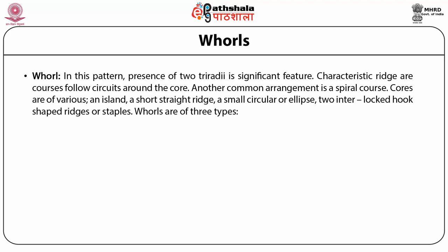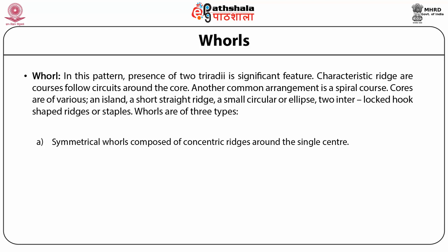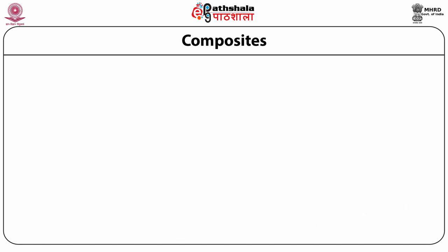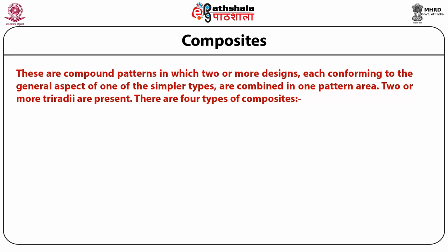Whorls are of three types. First, symmetrical whorls composed of concentric ridges around a single center. Second, whorls with a single center and spirally arranged ridges turning either in a clockwise or anticlockwise direction. Third, double-loop type whorls with two cores. Whorls have two triradii. Composites are complex patterns in which two or more designs, each conforming to the general aspects of one of the simpler types, are combined in one pattern area. Two or more triradii are present.